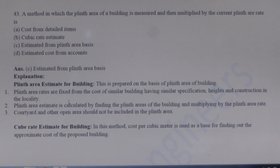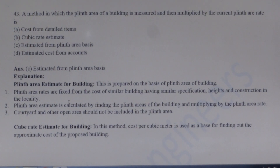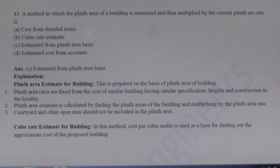Next question: A method in which the plinth area of a building is measured and then multiplied by the current plinth area rate to get the estimate is known as the plinth area estimate. These estimates are prepared on the basis of the plinth area of the building. The plinth area is multiplied by the plinth area rate. Courtyards and other open areas should not be included in the plinth area.